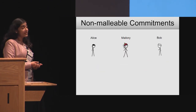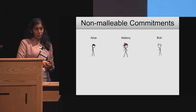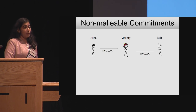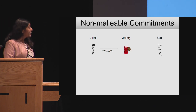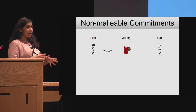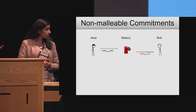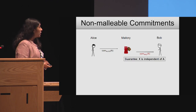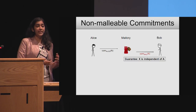More specifically, the situation we want to consider involves three parties: Alice, Mallory, and Bob. Mallory is expecting a commitment from Alice, and Bob expects a commitment from Mallory. But what if Mallory turns evil and instead of generating her commitment honestly, she takes the string she got from Alice, tampers with it in some way, and uses the resulting string as her own commitment to Bob. This is what we want to avoid. We want to guarantee that the value x committed by Mallory is independent of the value a that Alice was committing to.